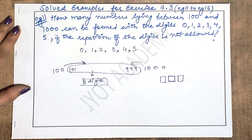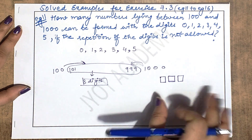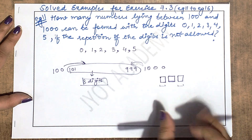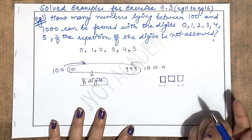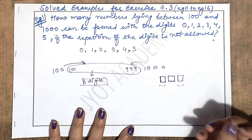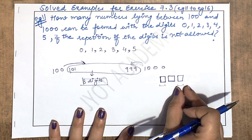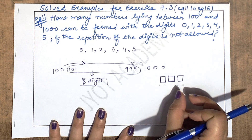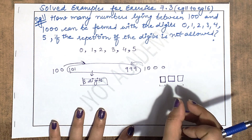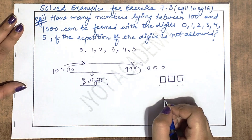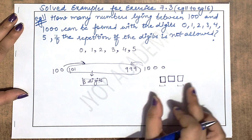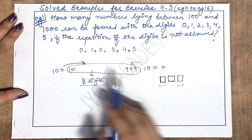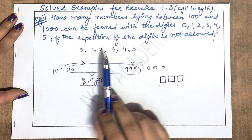Is question mein confirm ho gaya hai ki ek three digit number generate karna hai. Maine aapke liye three boxes bana liye hain. Two digit ya one digit number possible nahi hai. Yahan par koi condition nahi hai ki even number hi create karna hai ya odd - aap kisi bhi side se start kar sakte hain.